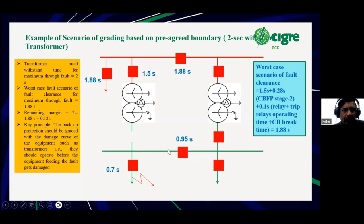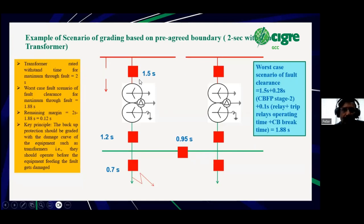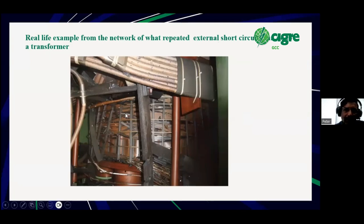For two transformers in parallel feeding a distribution network: a fault on a feeder is normally cleared by feeder protection instantaneously with unit protection, or in 700 milliseconds with backup. If the feeder fails to operate, the bus section opens first to prevent the transformer on the right side from feeding the fault, and then the transformer also opens. Normally for numerical relays, 250 millisecond grading margin is used. If a feeder protection fails, we open the bus section and LV incomer; if that fails, the next step is the HV breaker with another 300 millisecond margin; and if that breaker fails, circuit breaker fail operation clears the fault — all within two seconds. This is an old transformer that failed after feeding many short circuits — the result of electromechanical forces.